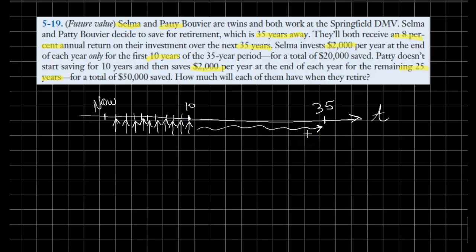We will solve the case for Selma first, and this is a two-step solution. Let's first figure out what goes on by the end of the 10th year, and then from year 10 to year 35.